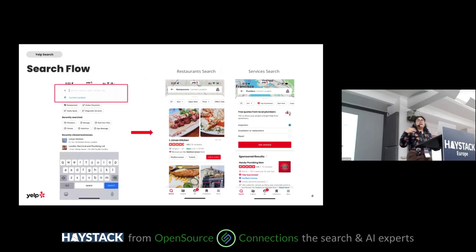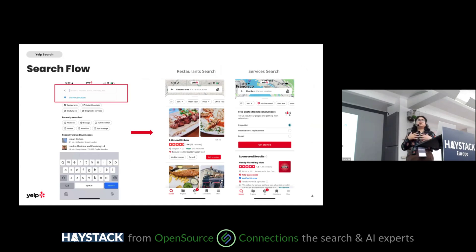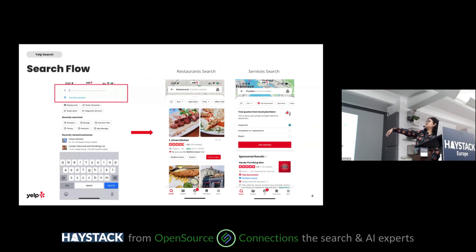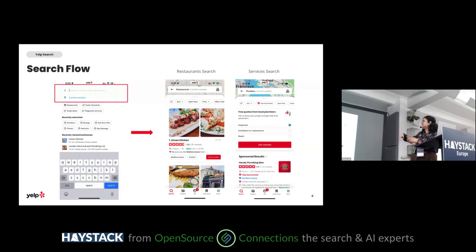Yelp search connects users with the businesses they're looking for. We want to find whatever businesses satisfy your search query. You might be looking for a new restaurant, in which case your search results might look like this page, or maybe you're having a plumbing issue at home and you type 'plumbers' and see something more specific to your intent.